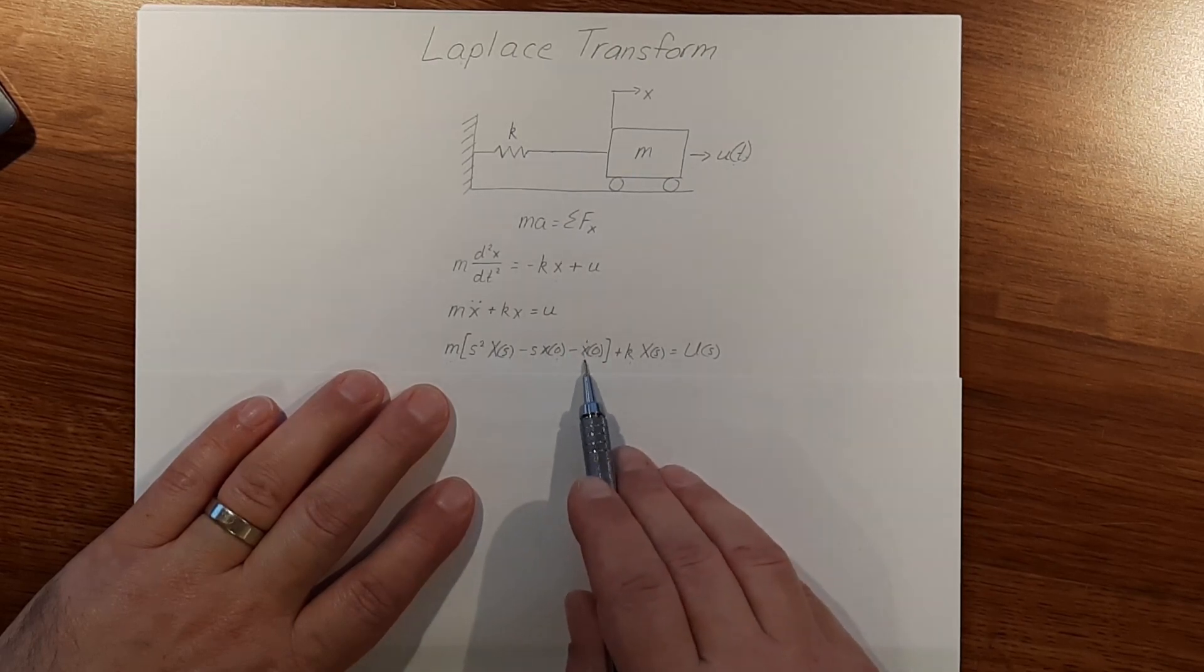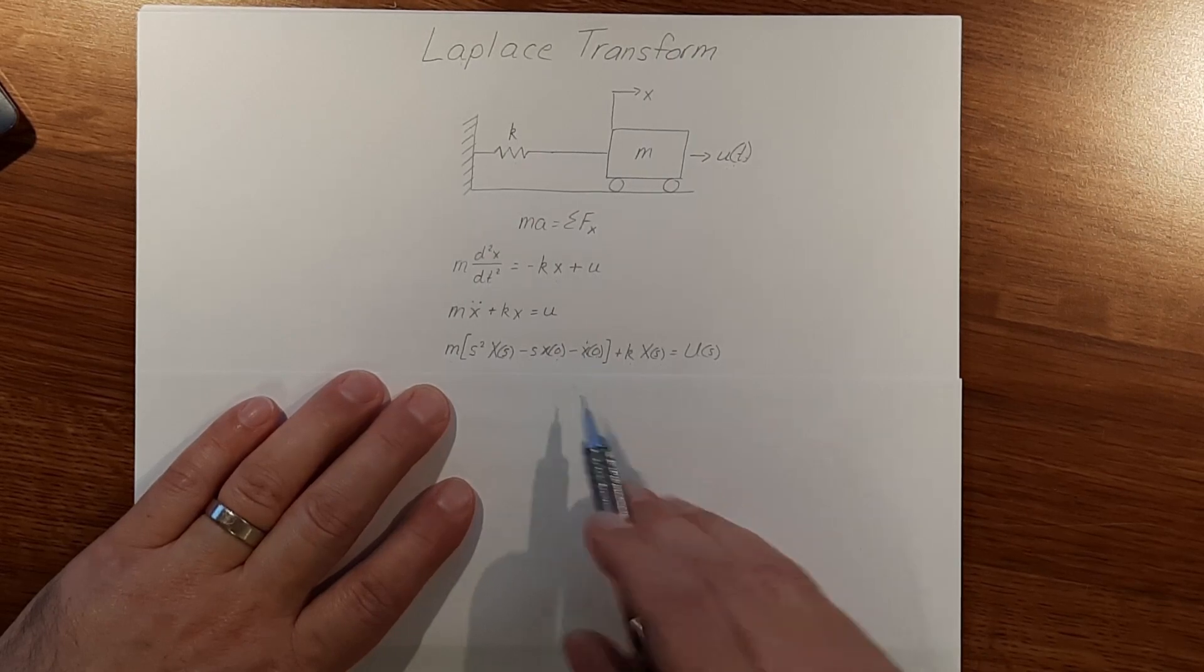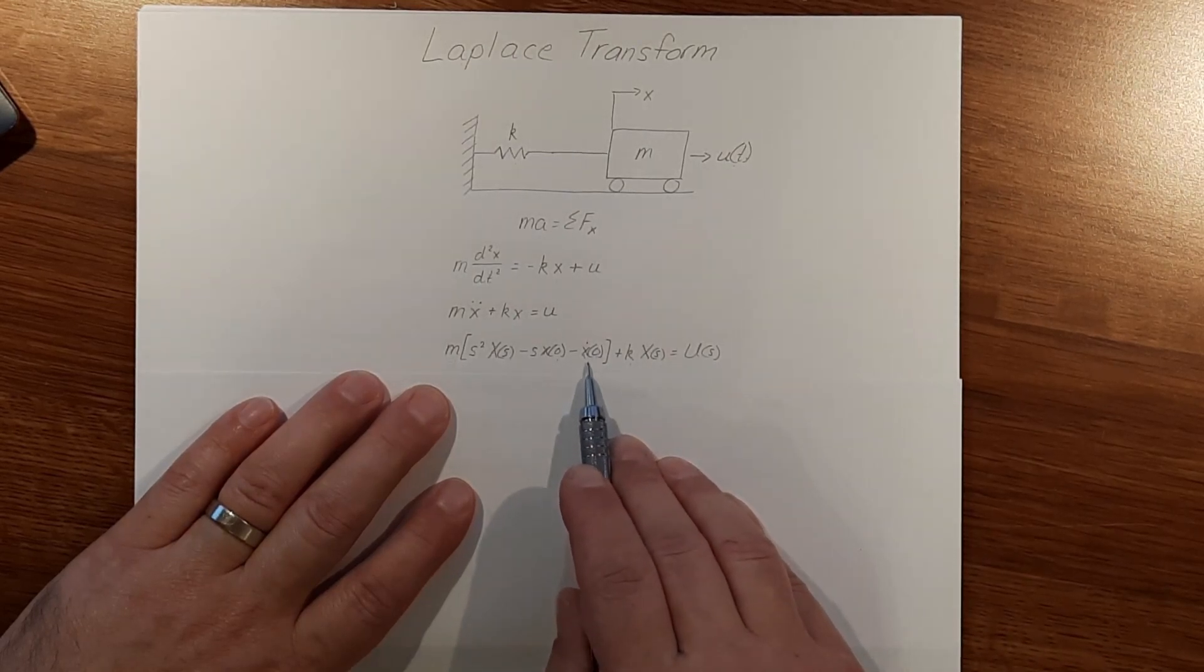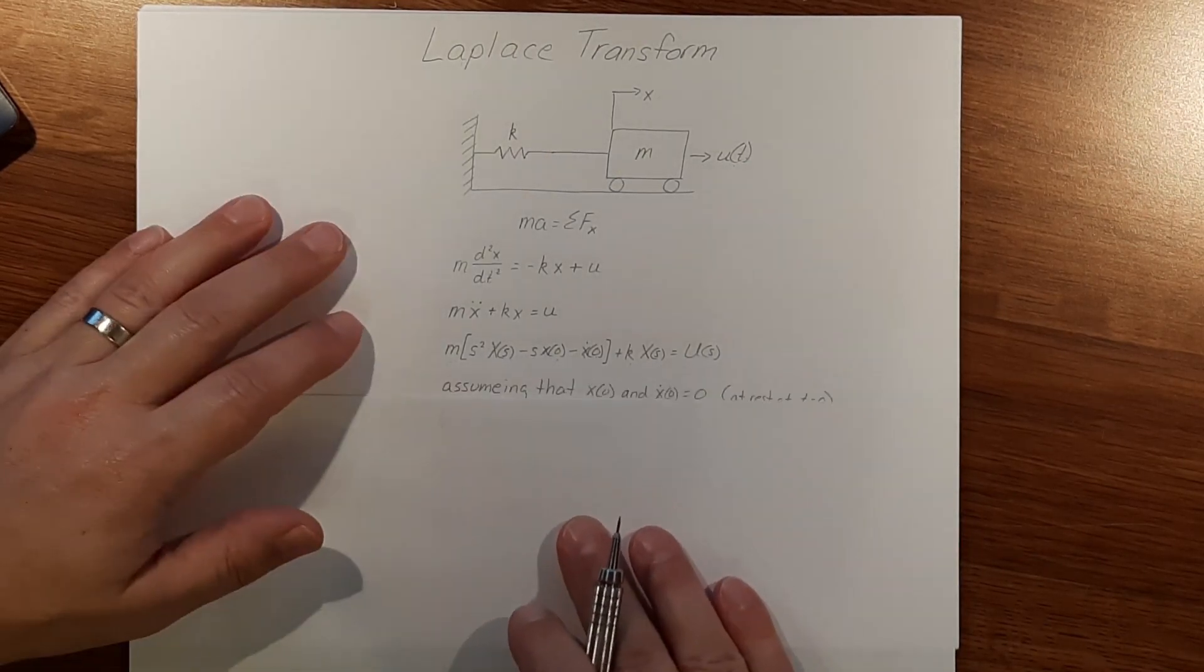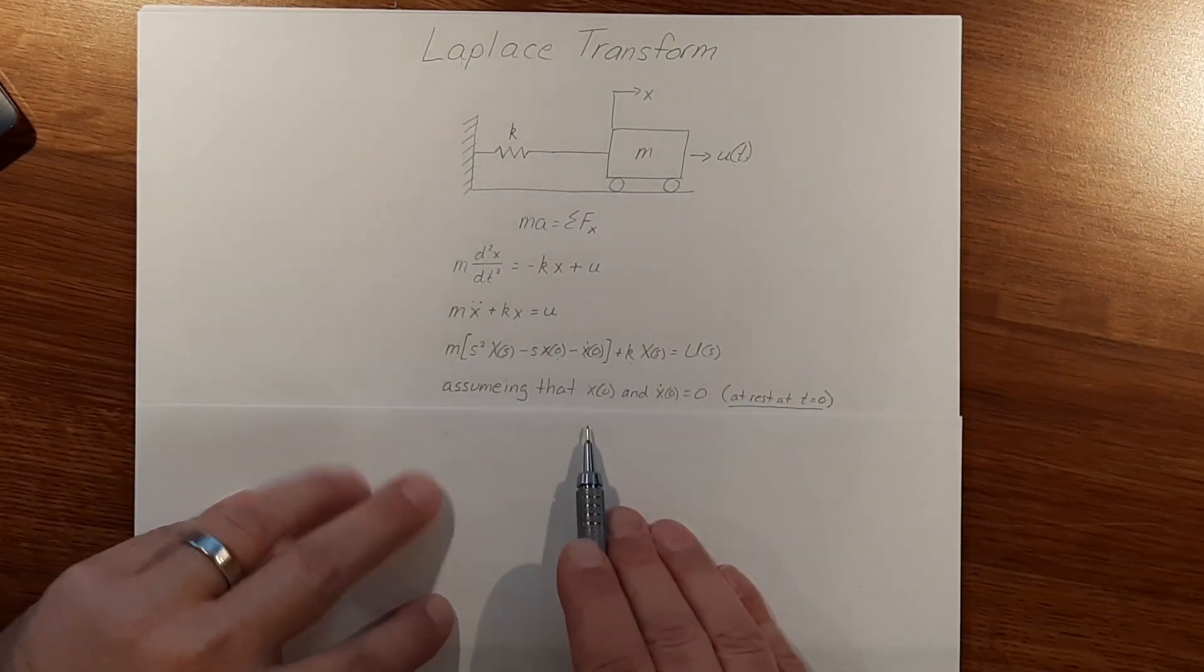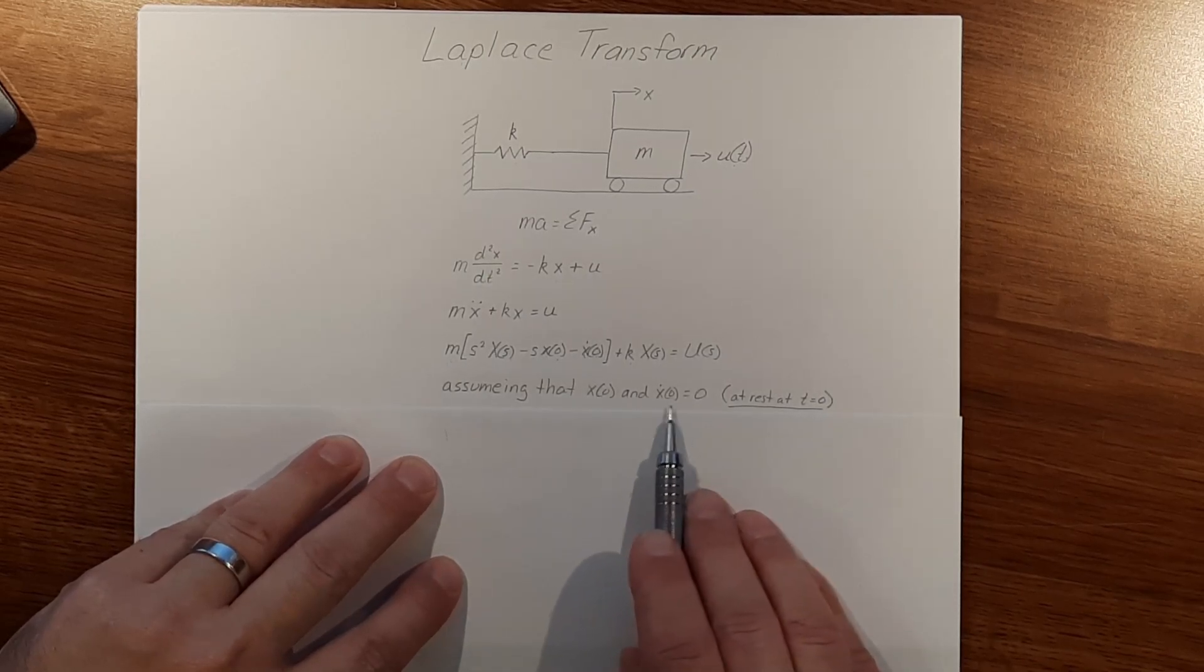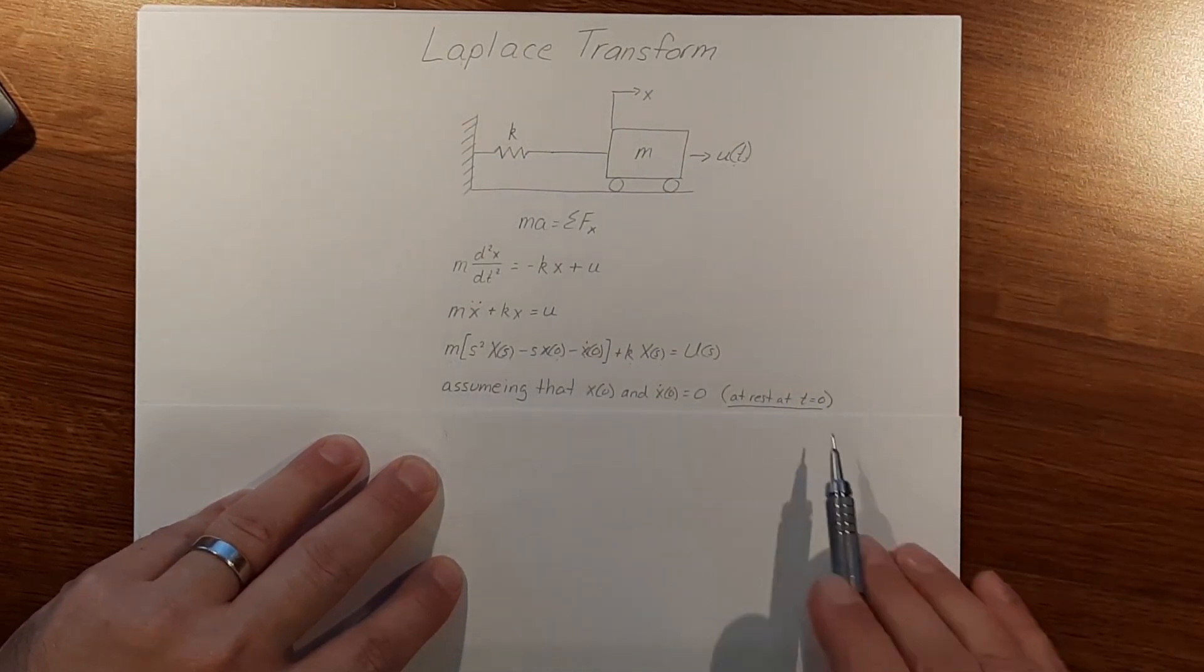And then what is the velocity. We know that x dot, or the first derivative of position, is velocity. So I also want to know what velocity is at time zero. For this situation, we're going to assume that x of zero and x dot of zero are zero.